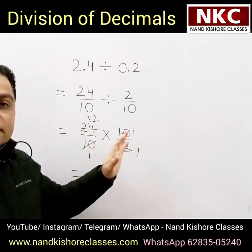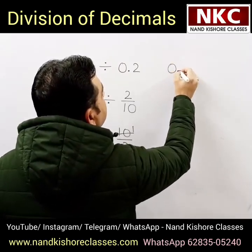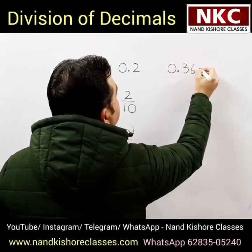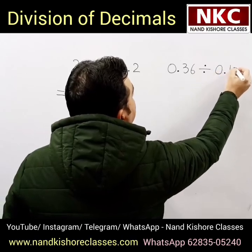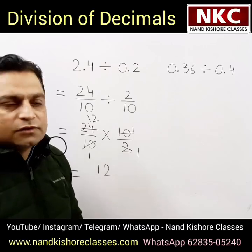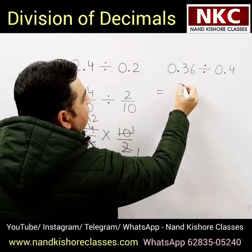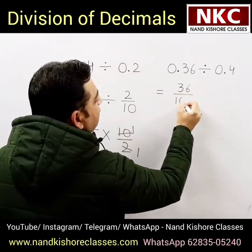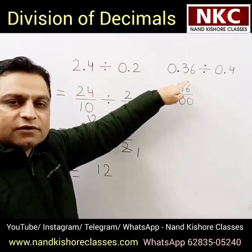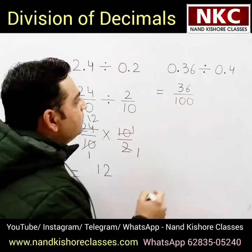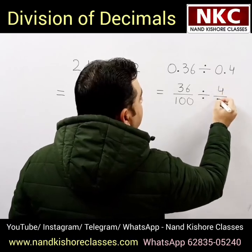I hope you are finding it easy. Let me give one more example. Let's suppose we have 0.36 to be divided by 0.4. What are we going to do? 0.36 can be written as 36 over 100, because after the decimal two digits are there, so obviously two zeros will come. Then 0.4 divided can be written as 4 over 10.